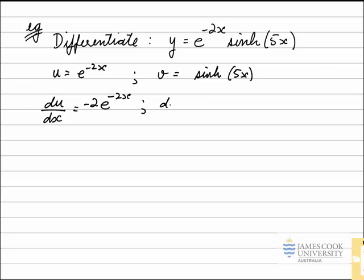For the second function, the derivative of sinh 5x, which is dv dx, the derivative of sinh x is cosh x, but it's the 5x inside the sinh function. The derivative of that, which is 5, must come out the front, and so that gives us 5 cosh of 5x.